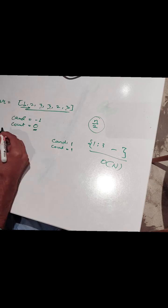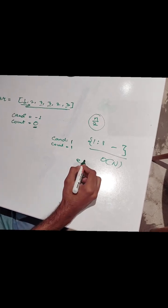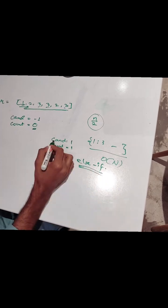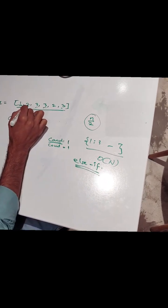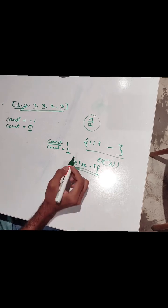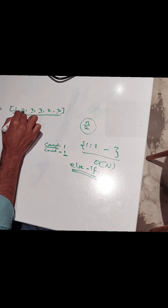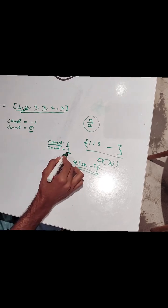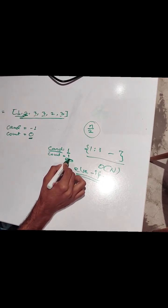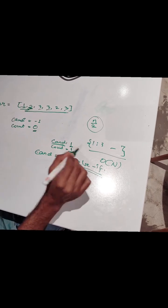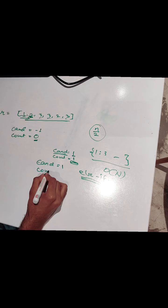So if there will be 1 again, else if, we will see if candidate is equal to the next element, we will just increase the count simply. And there will be the third loop which will show that if this element is not matching the candidate, it means we need to reduce this count. So we will reduce count. For example here is 2. So candidate will be still 1 but count will become 0.